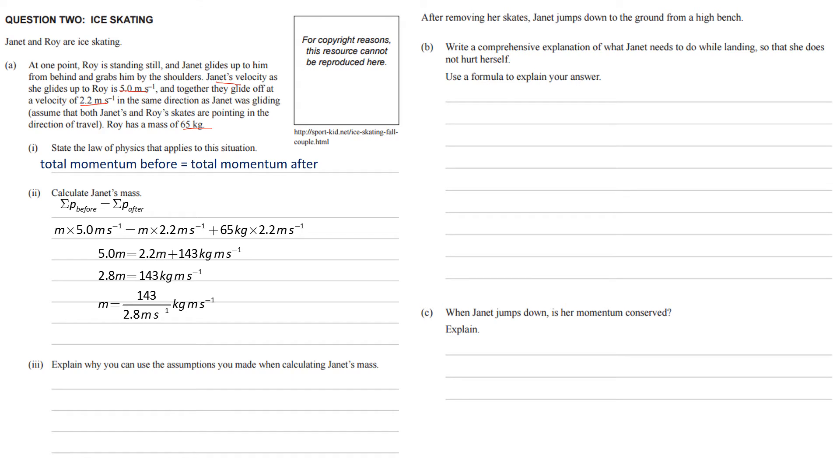And so we get 2.8 times the mass of Janet equals 143. So the mass of Janet equals 143 divided by 2.8. That gives us an answer of 51.07, or 51 kilograms, when we put it to the correct number of significant figures.